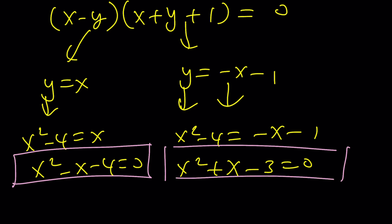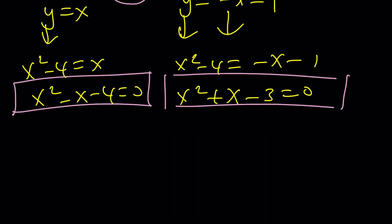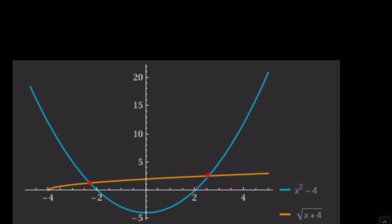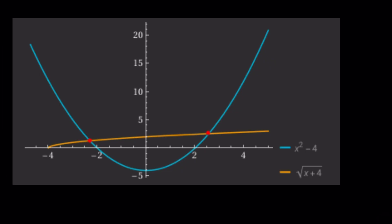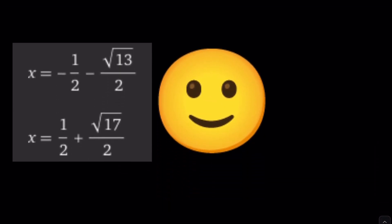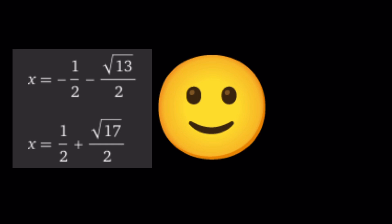Since y equals x squared minus 4, substituting x equals y gives x squared minus x minus 4 equals 0, and substituting y equals negative x minus 1 gives x squared plus x minus 3 equals 0. These are exactly the same factors we found with the first method! The graph shows two intersection points, so some solutions from the four total are extraneous — I'll leave that for you to figure out. Thank you for watching — please comment, like, and subscribe, and check out a plus bi. Bye!